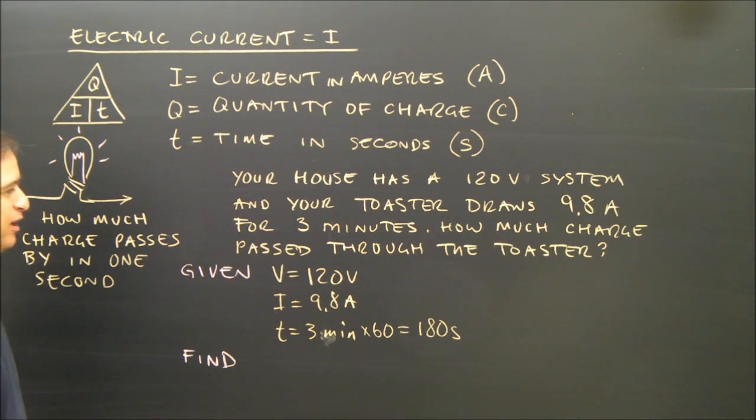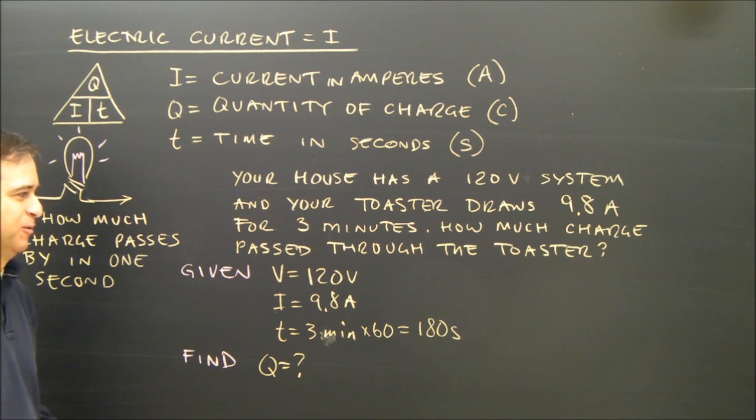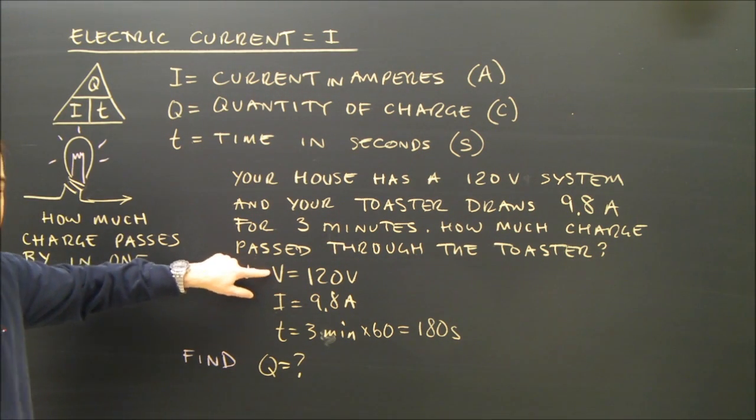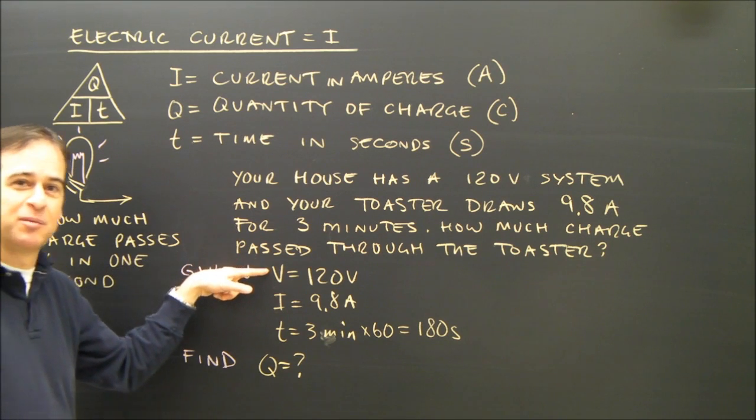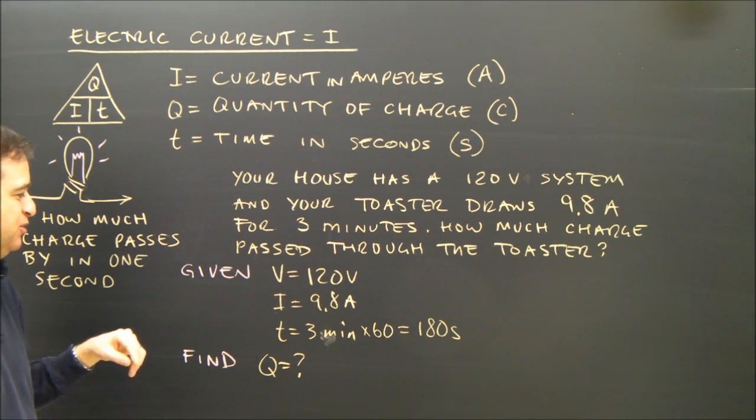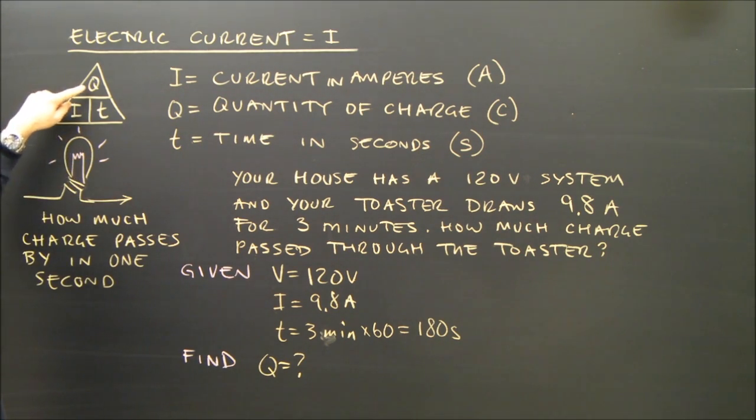I'm looking for how much charge, Q. So what does Q equal? Well I have a formula, and it relates these. And I notice that I don't actually need this number. Sometimes numbers are given in a problem to see if you can pick through and figure out which formula you're supposed to use. But I have a formula that relates three of these. This one here. And it's Q is equal to I times T.